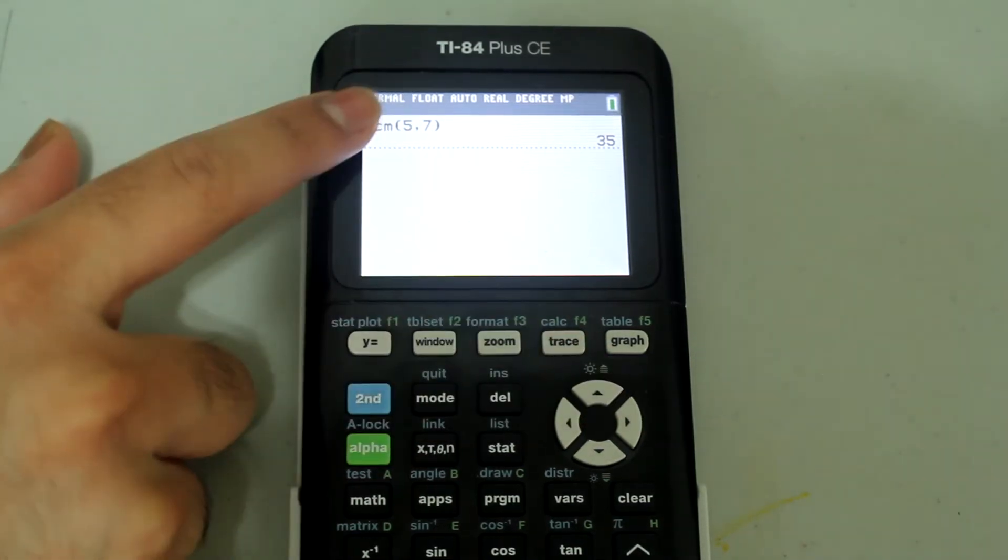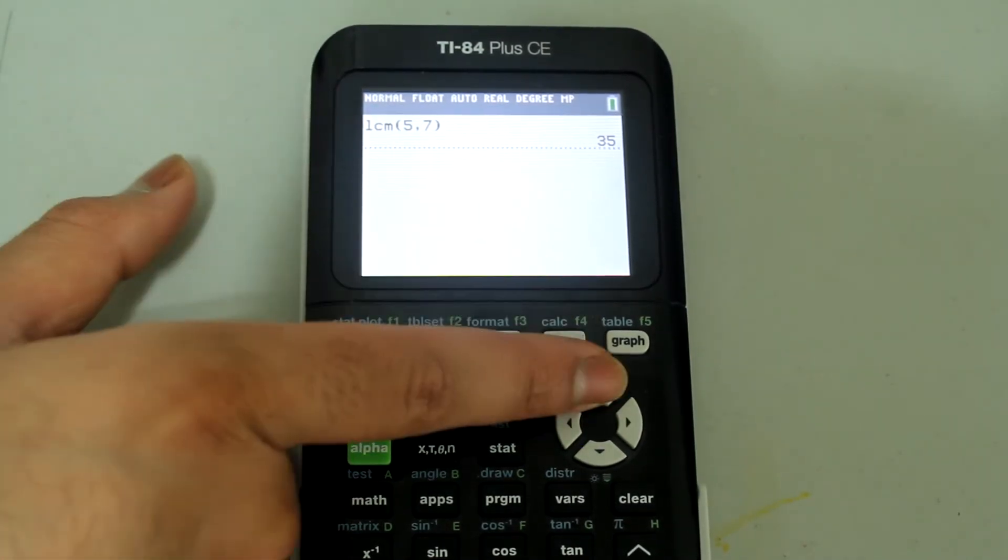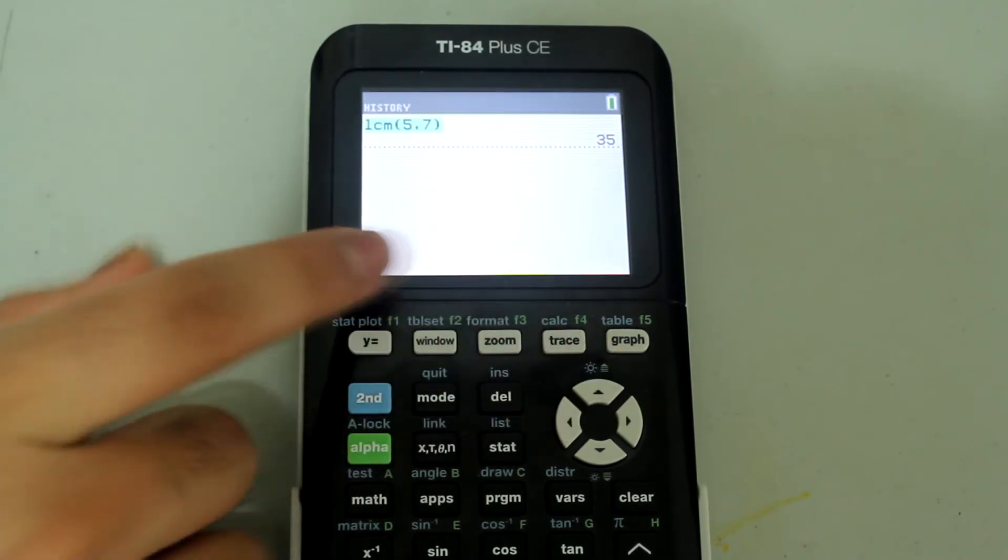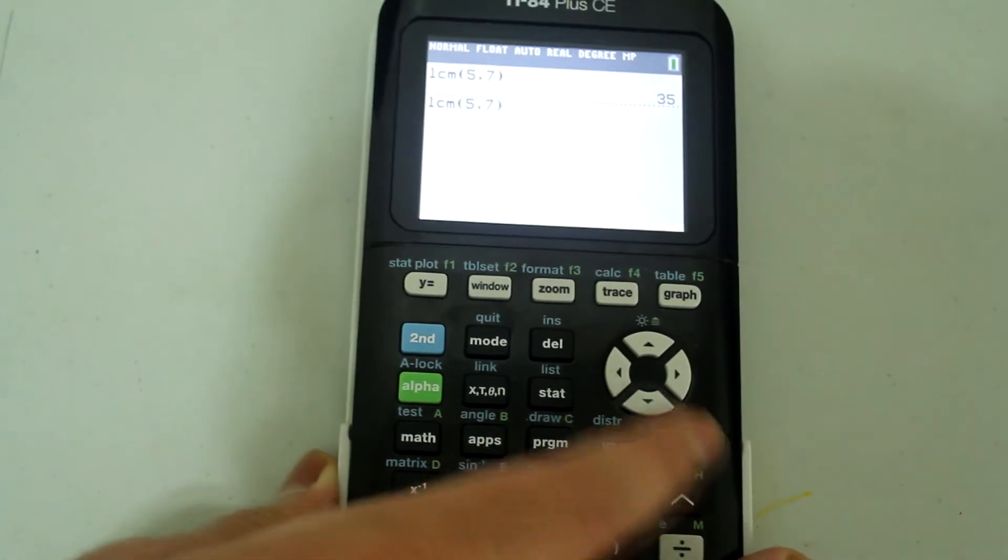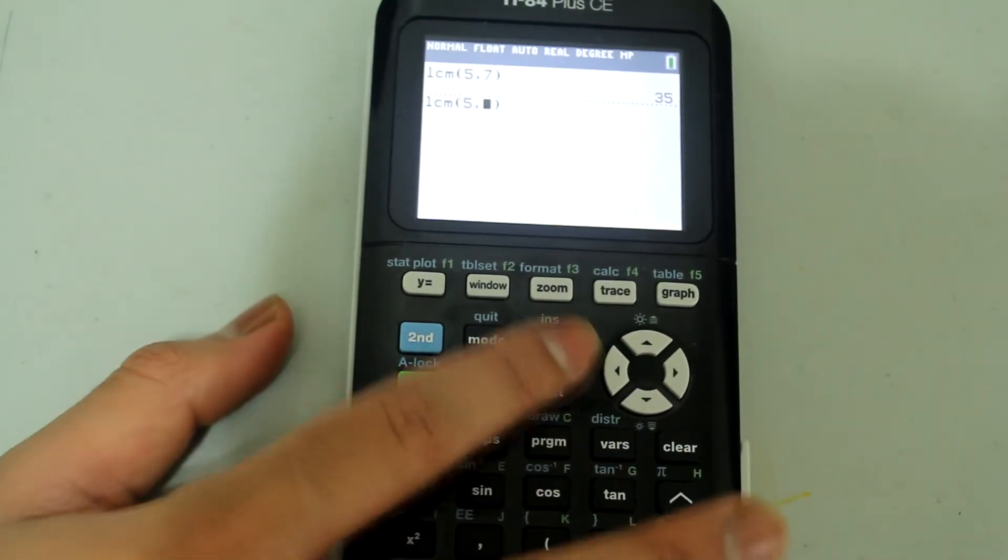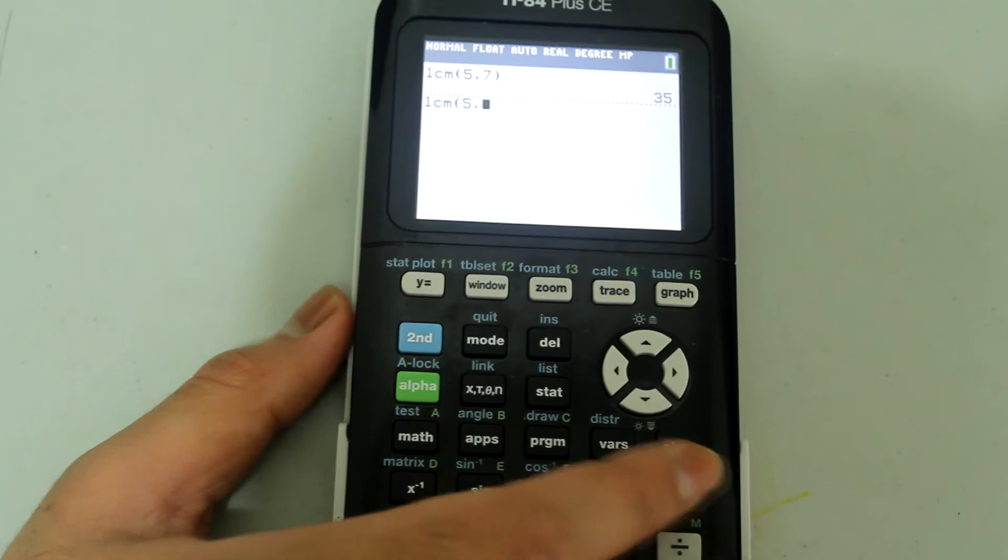So what I'm going to do, since this LCM option is already on the screen, I'm just going to arrow up and press enter to select it. And then I'm just going to clear the entries on the inside.